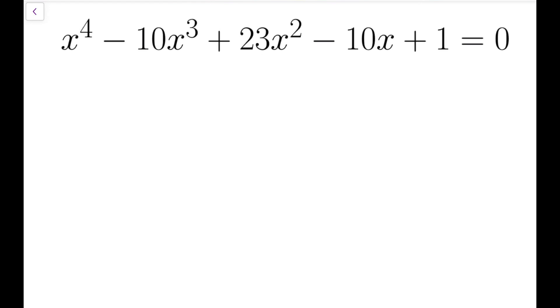One thing that makes this equation special is that there is a symmetry in the coefficients of this quartic polynomial. The coefficients are in descending order 1, minus 10, 23, minus 10, and 1. And you will read in ascending order, it is 1, minus 10, 23, minus 10, and 1, which is actually the same.